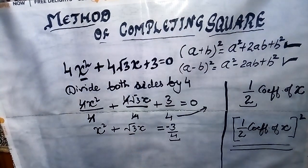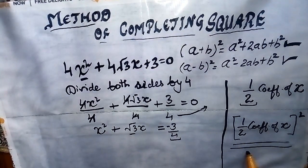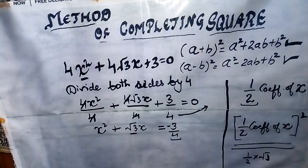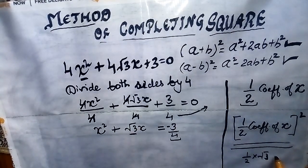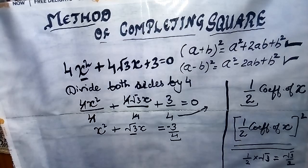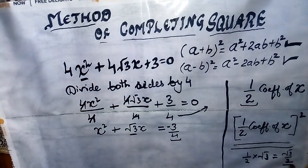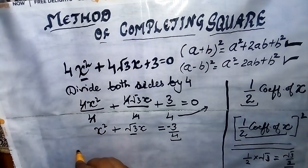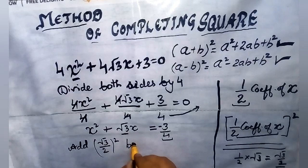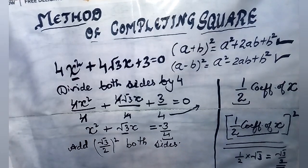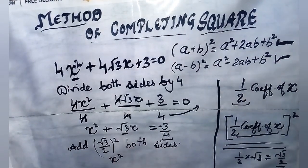Now what do we need to add? First, take half of the coefficient of x. The coefficient of x is √3, and half of √3 is √3/2. So what we have to do now is add the square of this half coefficient — that is (√3/2)² — to both sides of the equation. The equation becomes x² + √3 x + (√3/2)² equals -3/4 + (√3/2)².